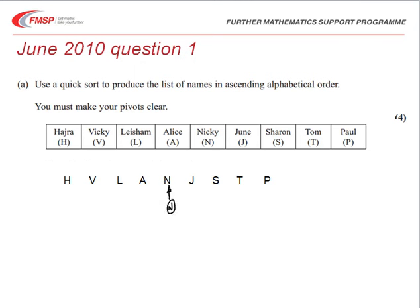We write those that are before N in the alphabet to the left without changing the order, and those that are after N to the right, again without changing the order. So what is produced is the following list: H, L, A and J are in the alphabet before N, and afterwards V, S, T and P.